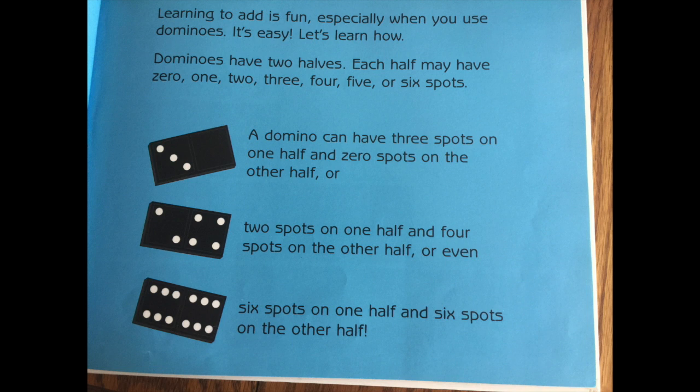Dominoes have two halves. Each half may have zero, one, two, three, four, five, or six spots. A domino can have three spots on one half and zero spots on the other half, or two spots on one half and four spots on the other half, or even six spots on one half and six spots on the other half.